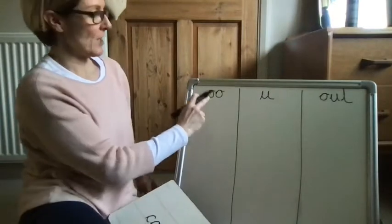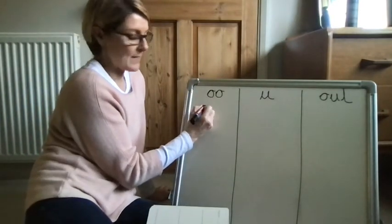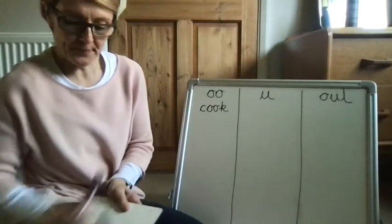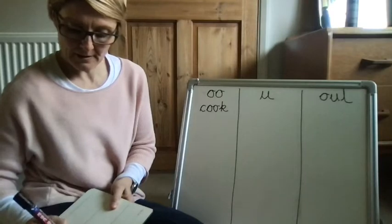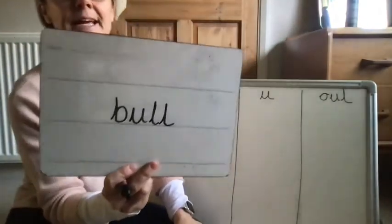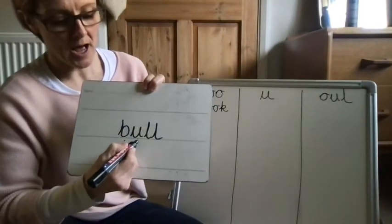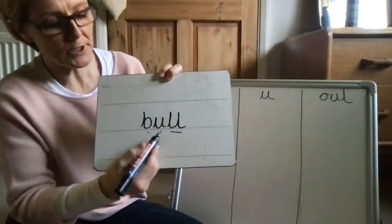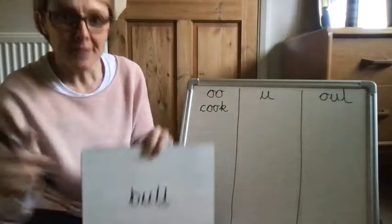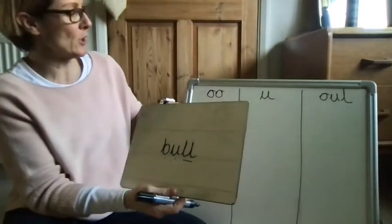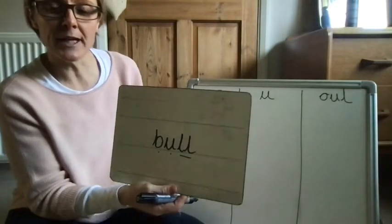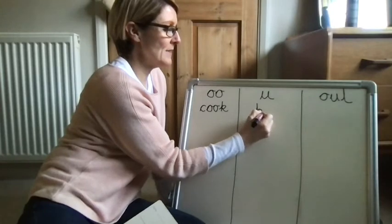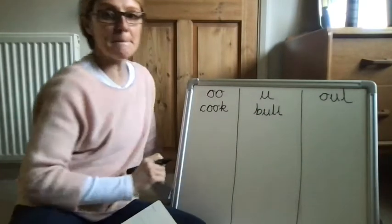With your pencil or pen, can you write it under the correct spelling, saying the sounds as you write it? C-oo-k. Cook. Here's another one. What does this one say? If I sounded it out — b-a-o-l — 'baol' — does that make sense? No. So it's 'bull' — a bull with horns. Having a look at your sheet, can you find the right spelling of the 'oo' in 'bull' and write it down? B-u-l-l. Bull.